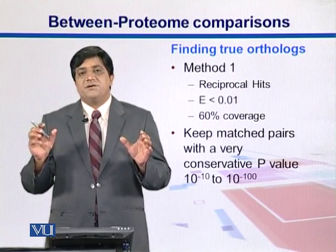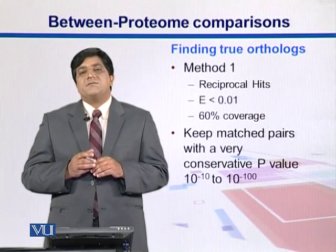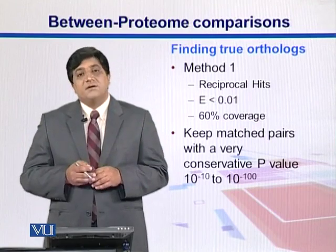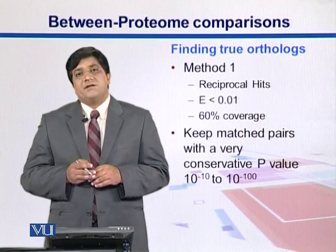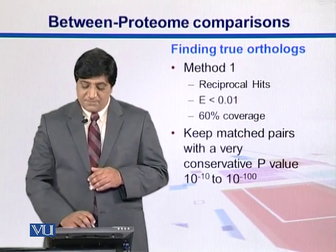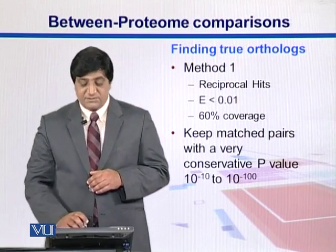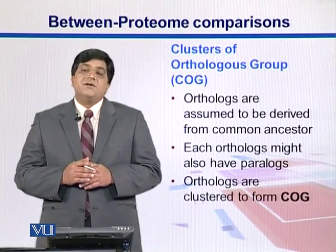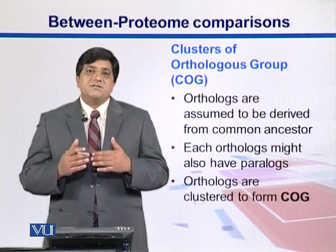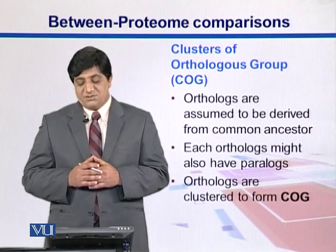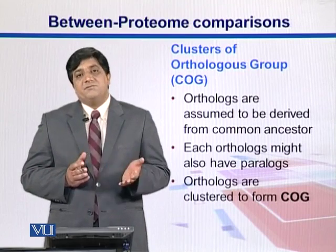Since BLAST is a local search tool, it compares different regions among different genes or proteins and looks for matches between regions. Sometimes both proteins are not well covered in the alignment, so we want at least some coverage criteria — for example, 60% coverage — to keep those matched pairs. Sometimes at very conservative or very low p-values, maybe like 10 to the power of minus 10 or minus 100, we can group organisms that are similar to one another.